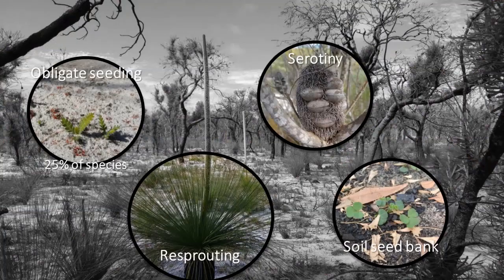As a response to the fire regimes that plants have experienced throughout their evolutionary history, many species have developed traits or strategies to cope with fire. We can generally characterise these strategies as either re-sprouting or obligate seeding, based on whether established plants have the ability to survive fire or not. Re-sprouters have developed ways to protect growing buds, either under thick bark such as in eucalyptus, or in the soil such as plants that have developed lignotubers. After fire, these plants can re-sprout from these protected buds.